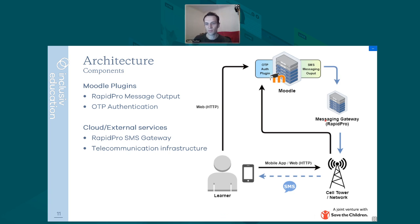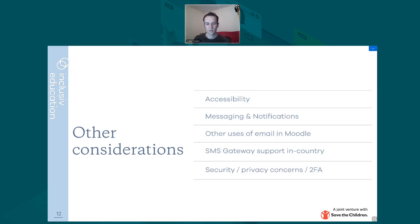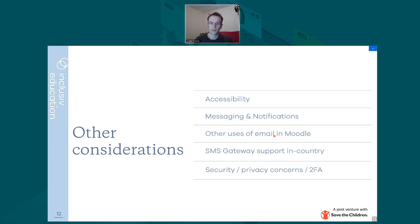The messaging gateway service we've used is called RapidPro, which was designed and came out of the UN Innovation Fund quite a few years ago. It's a stable product, particularly designed for use in developing countries. Some of the other considerations we've factored in as part of this development are around accessibility — making sure we're using standard Moodle form components, standard Google reCAPTCHA components, and even looking at the fact that you can deliver some of these one-time password codes using a voice service, which is one of the advantages of the RapidPro gateway.